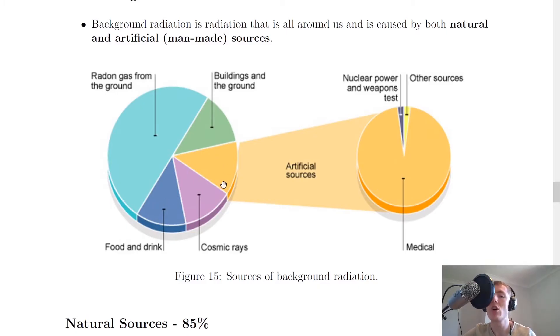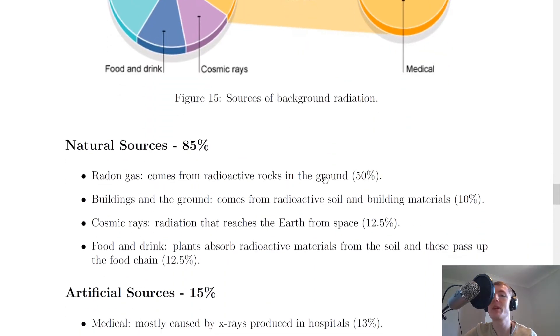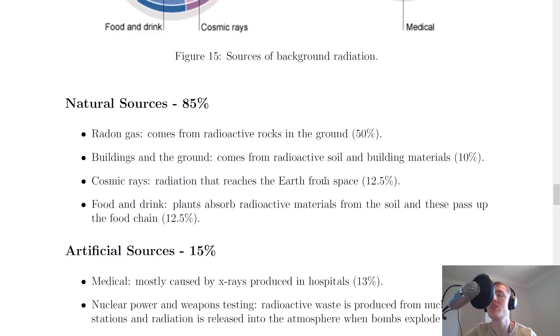We then have a good chunk of our pie there that is artificial sources. So artificial sources are things like medical sources, like x-rays, nuclear power and weapons testing, and other sources. So let's break this down and look at the actual percentage contribution of each.